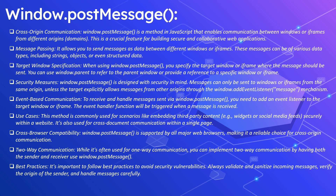When using window.postMessage, you specify the target window or iframe where the message will be sent. You can use window.parent to refer to the parent window, or provide a reference to a specific window or iframe. For security, messages can only be sent to windows or iframes from the same origin, unless the target explicitly allows messages from other origins through event listeners.